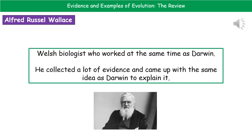The second important person is Alfred Russel Wallace, a Welsh biologist working at the same time as Charles Darwin. He never really got the same recognition, but he also collected a lot of evidence and came up with the same idea as Darwin to explain it.